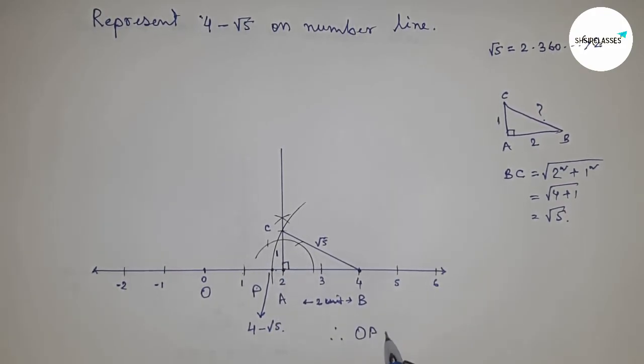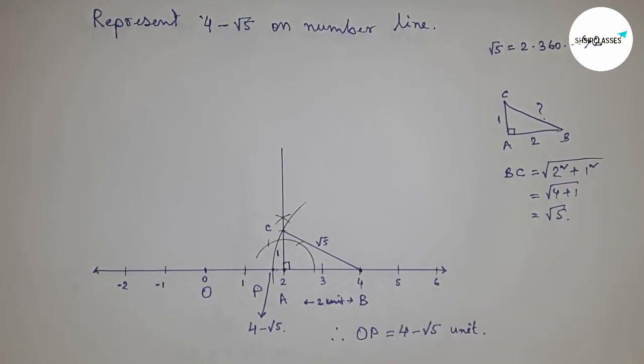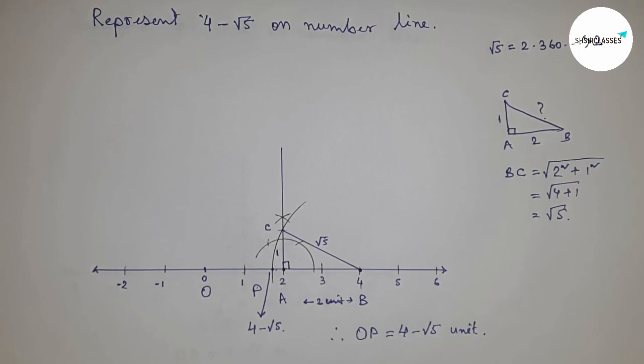So this is the representation of 4 minus root 5. Therefore, OP equals 4 minus root 5 units. That's all, thanks for watching. Please subscribe to the channel and press the bell icon for future videos.